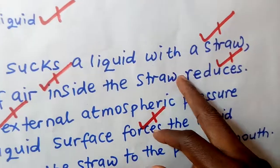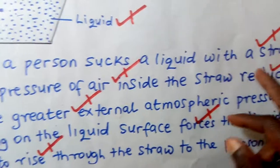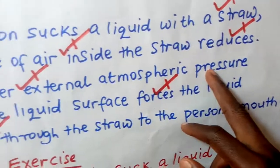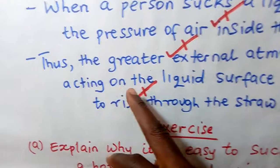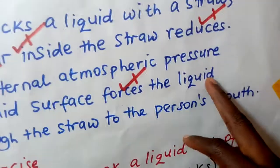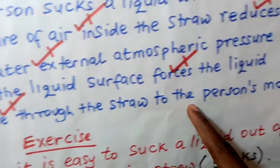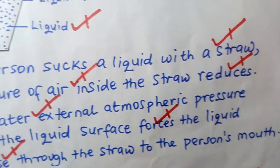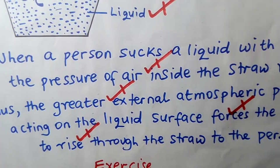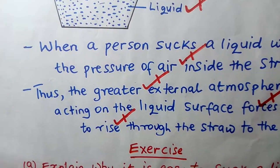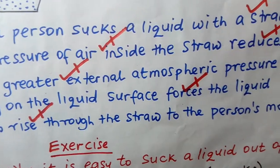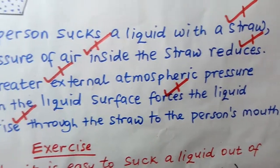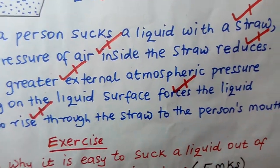When a person sucks a liquid using a straw, the pressure of air inside the straw reduces. This means the pressure outside becomes greater. The greater external atmospheric pressure, acting on the liquid surface, forces the liquid to rise through the straw to the person's mouth.